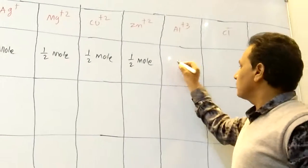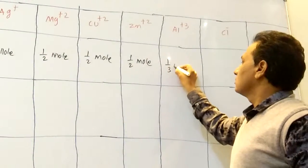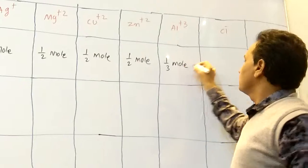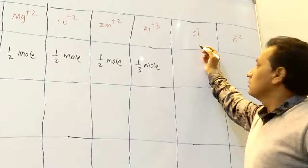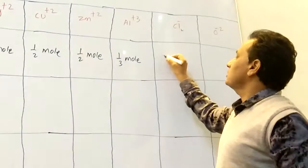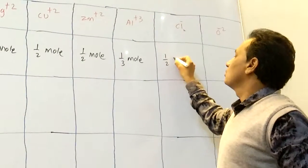Here plus three, plus three means one by three mole. Deposit here, it is Cl2, that's why one by two mole.